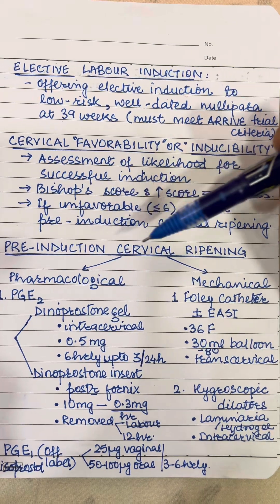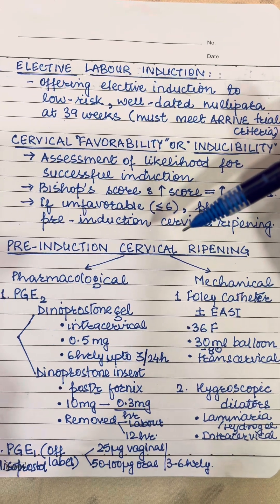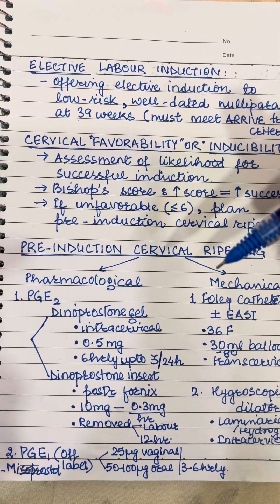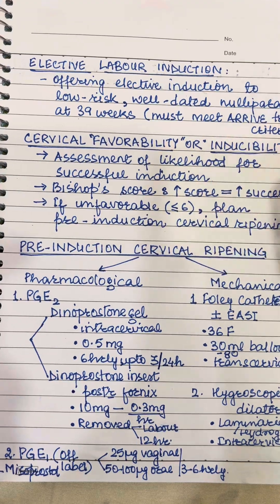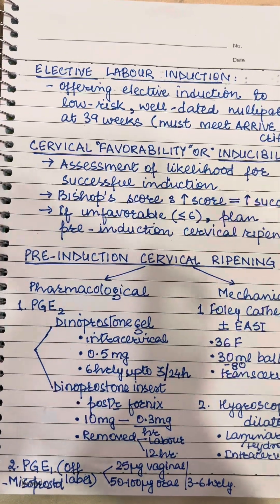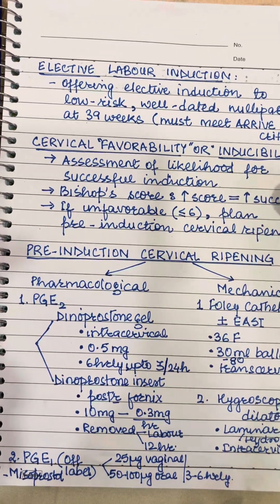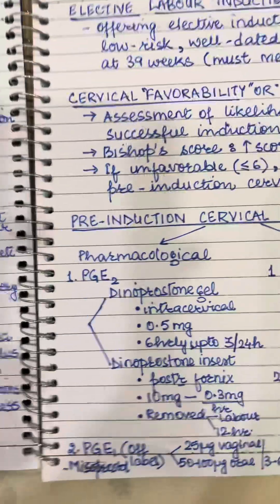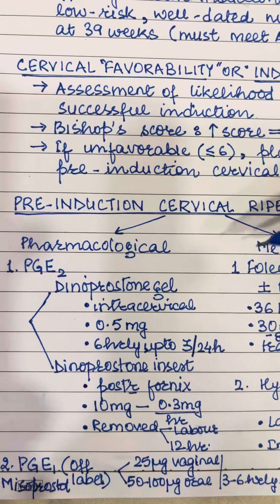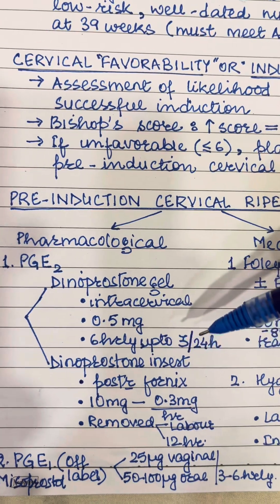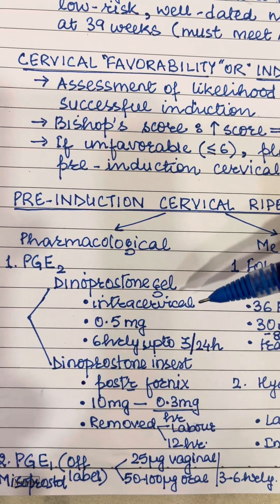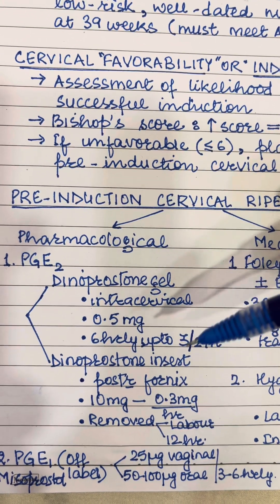Pre-induction cervical ripening is done with pharmacological agents like PGE2 and PGE1. PGE2 is given in the form of a gel in a dose of 0.5 mg, 6-hourly, up to 3 doses in 24 hours, placed intracervically.